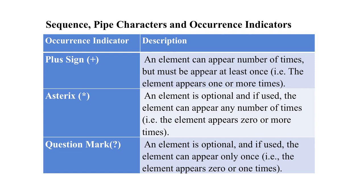There are different operators used: plus, asterisk, and question mark. Plus means at least once. Asterisk means any number of times. Question mark means it is optional, and if used, it appears only once.